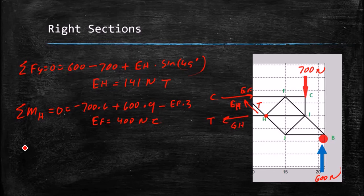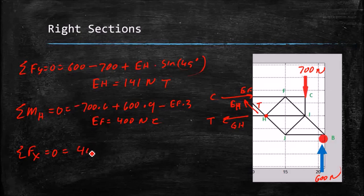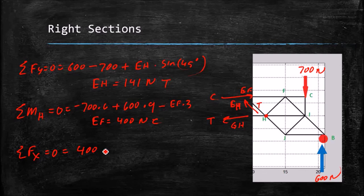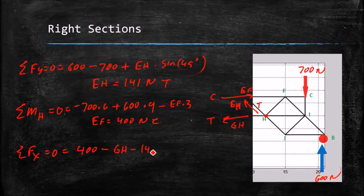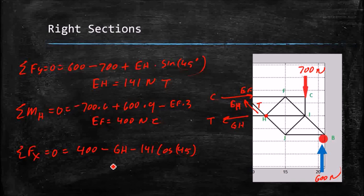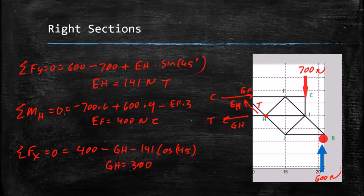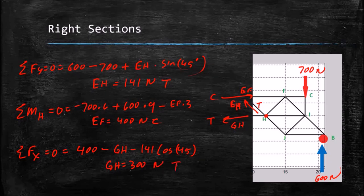And now I can do the sum of the forces in the x direction equals zero. And that's going to be equal to my EF, which is 400 newtons, minus GH, which is still unknown, minus 141, the force in EH, times the cosine of 45 degrees. And solving that out, I come up with GH equals 300 newtons in tension, which is the same answer we got before.